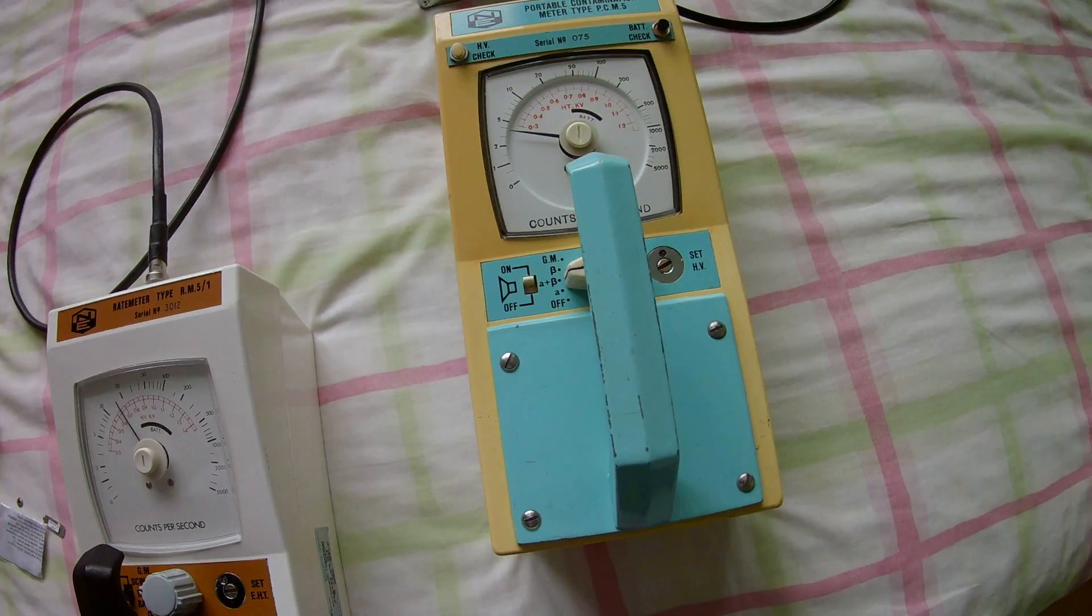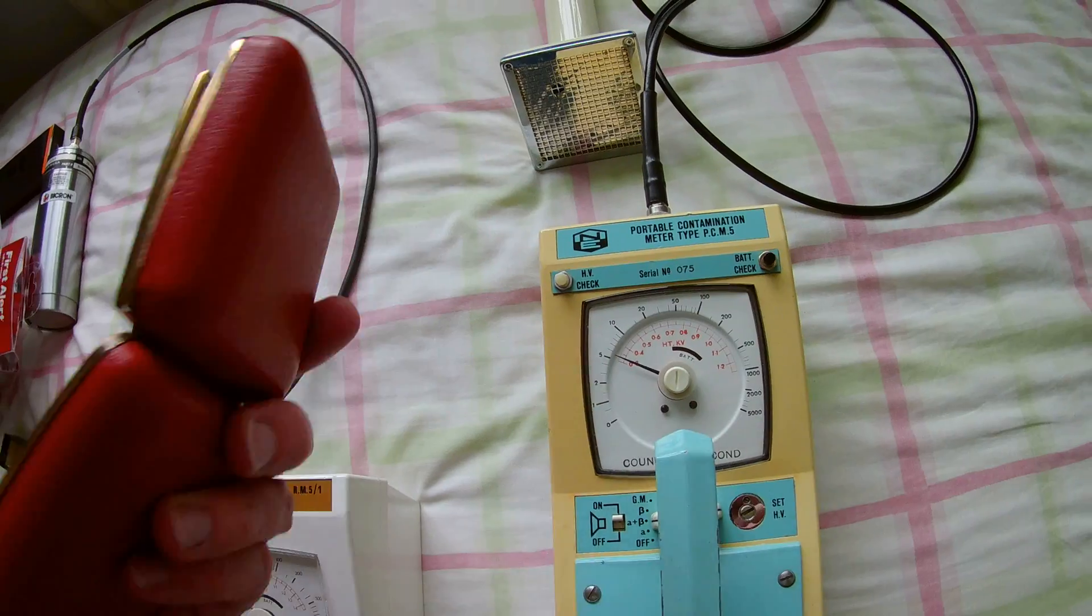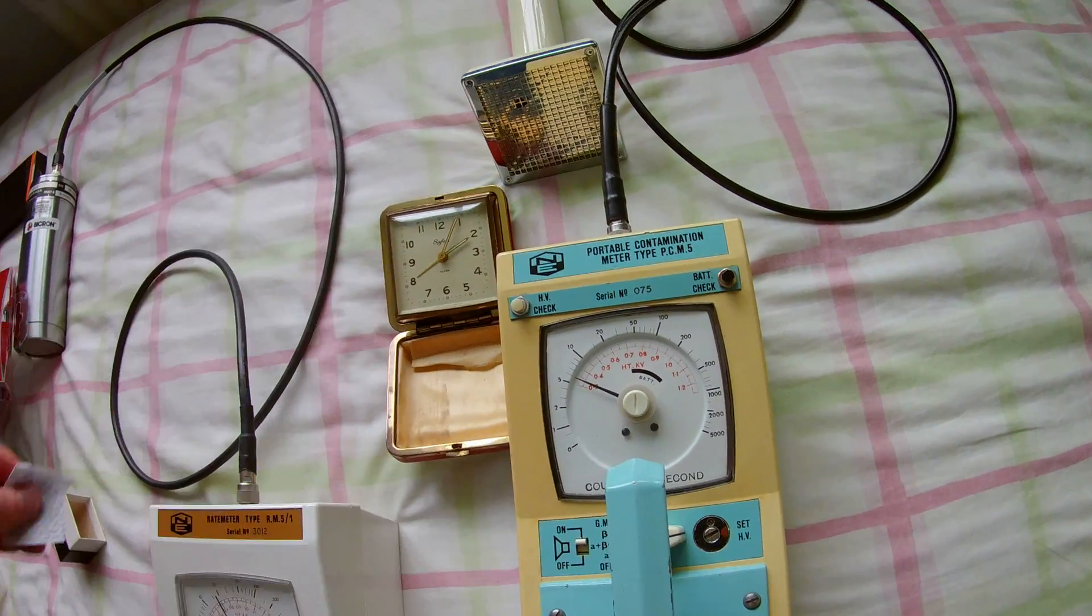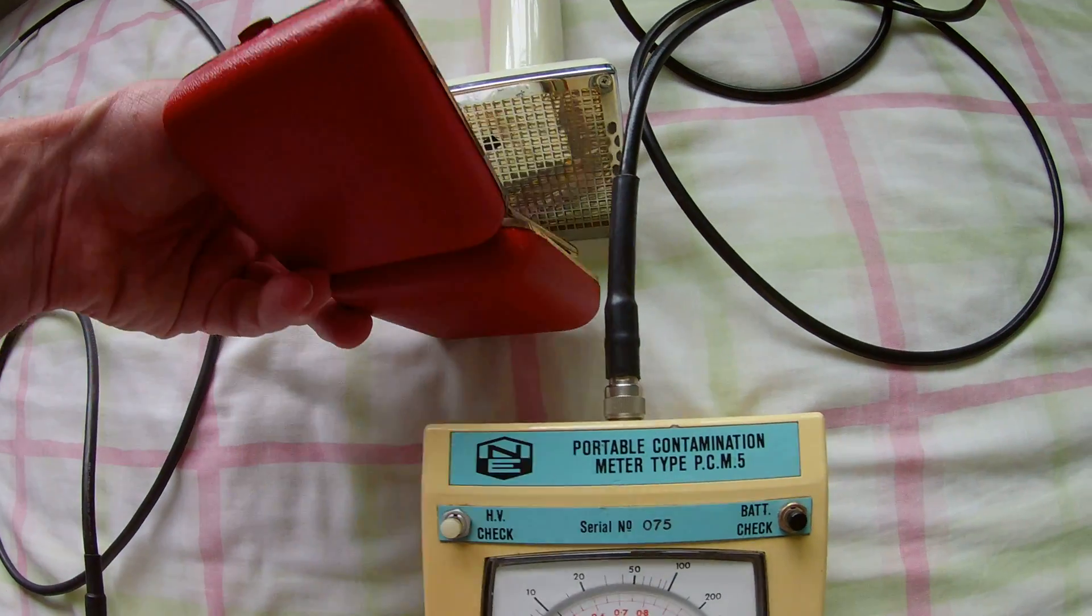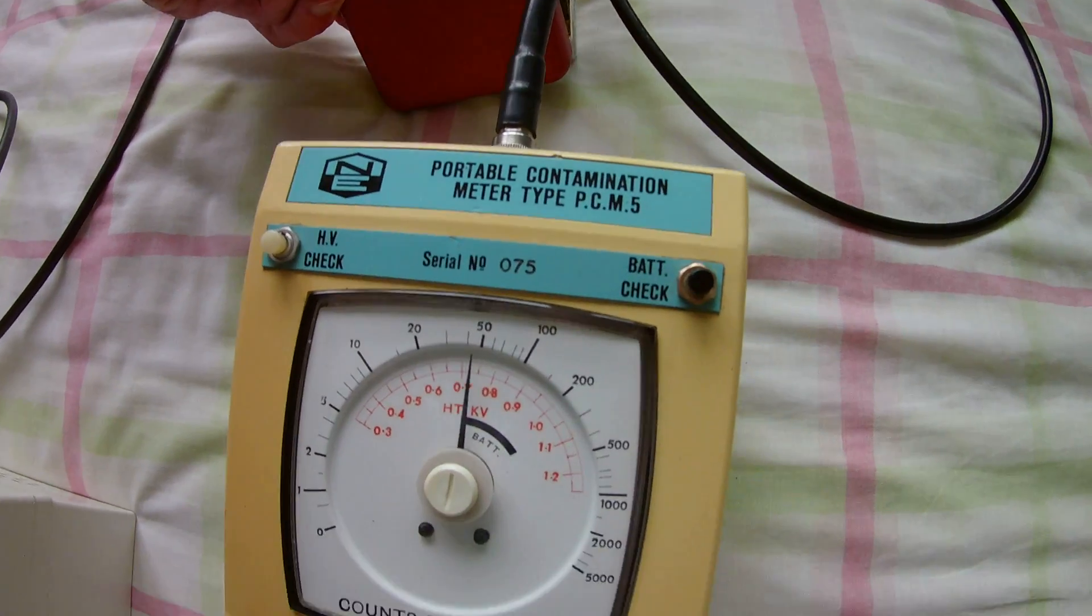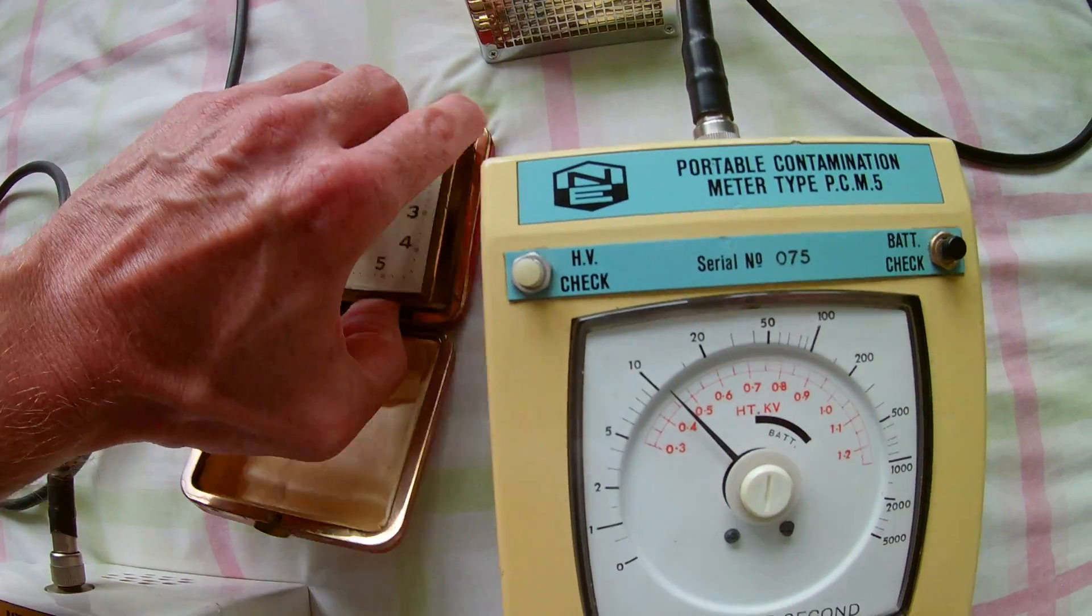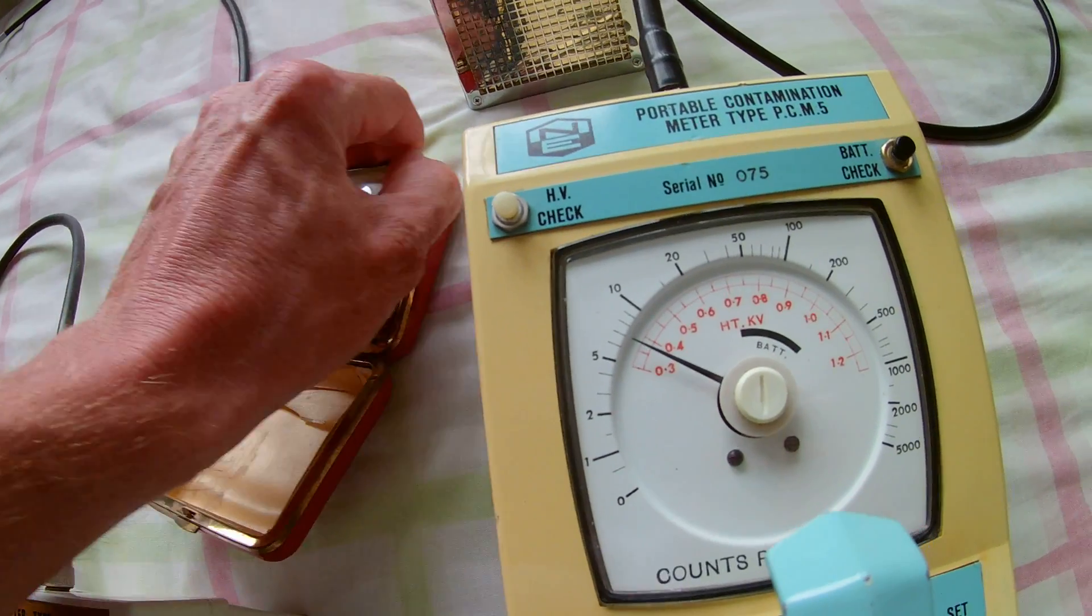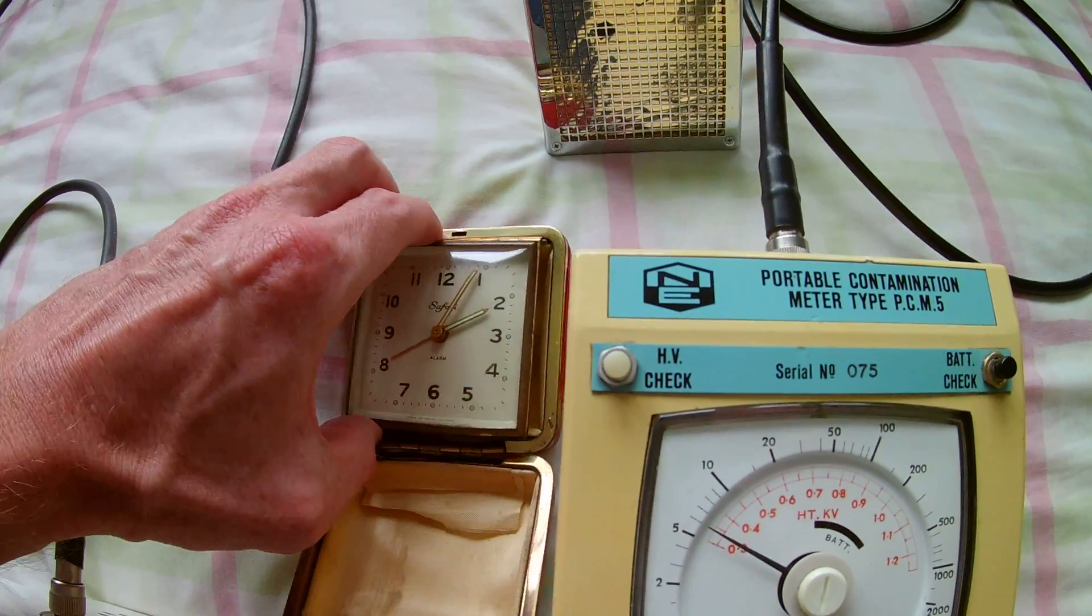Something else that's interesting is this. This is a luminous clock, safari clock, containing a radium luminous dial. This is through the plastic cover, but we can actually unclip that to expose the hands to see what the difference is in the readings.